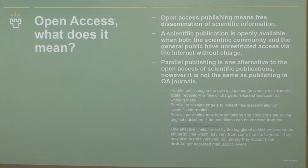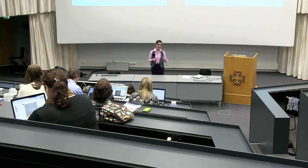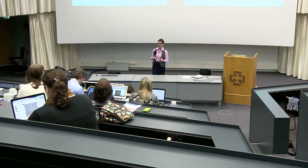Parallel publishing may face limitations and conditions, and there is a service called Sherpa Romeo — many of you probably know this — where you can check the situation. Another very effective way publishers limit open access is by setting embargo times, during which you are not allowed to publish an article freely and openly on the Internet. But usually, they accept that the final draft — the author accepted manuscript — is deposited in the digital repository.